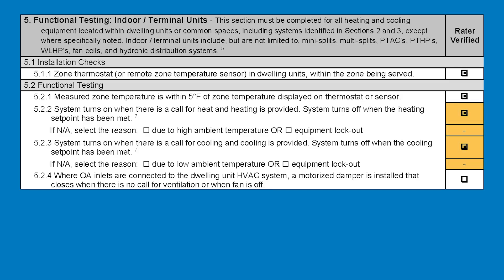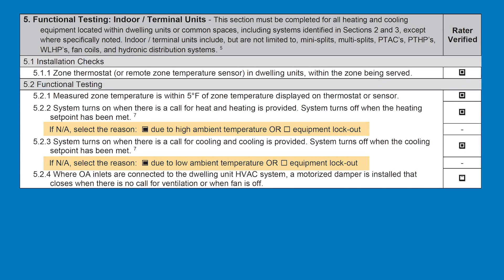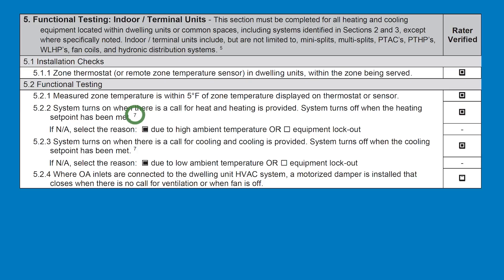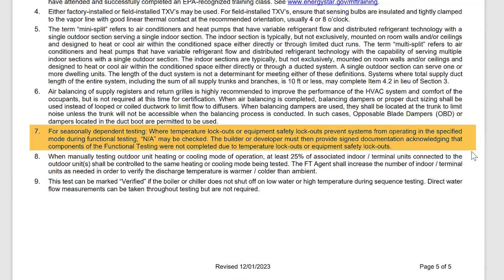When these sections have been completed, mark the appropriate checkbox in the columns on the right. There are some exceptions where someone may mark NA, or not applicable, for certain reasons — such as high or low ambient temperature, or equipment lockout due to ambient temperature. If this is the case, mark the appropriate box, but also confirm that you are getting the builder or developer to provide signed documentation acknowledging the component of the functional testing was not completed due to temperature lockout or equipment safety lockouts.